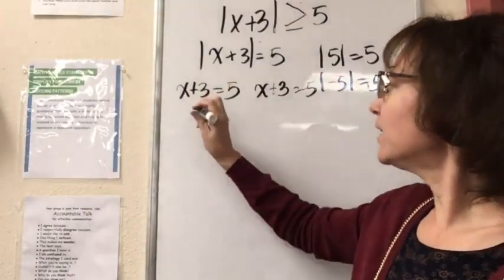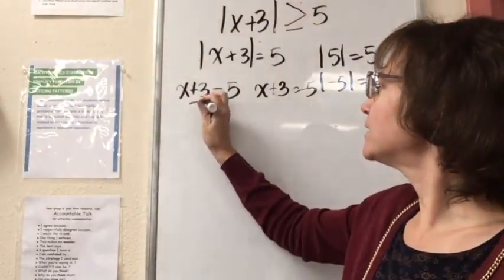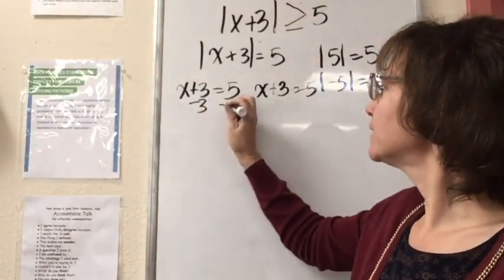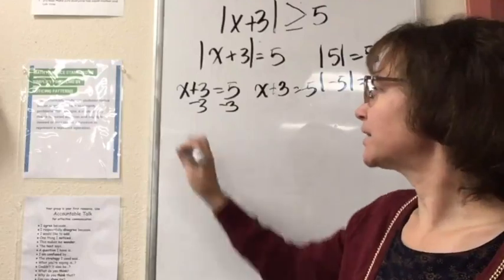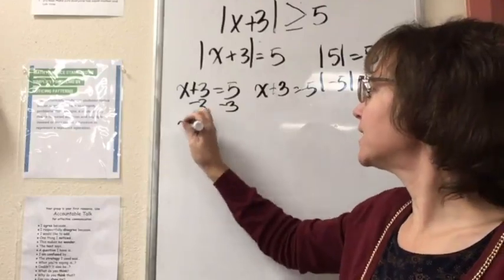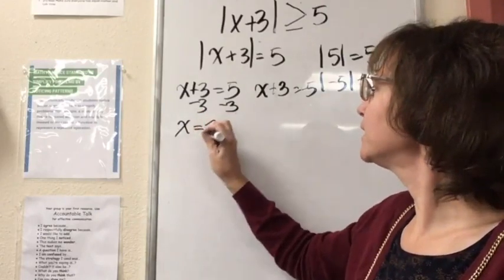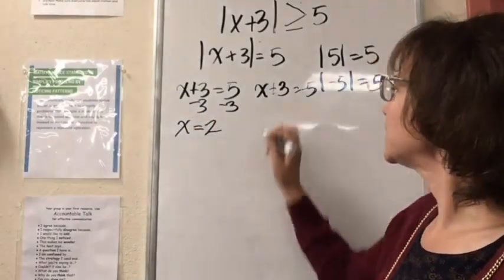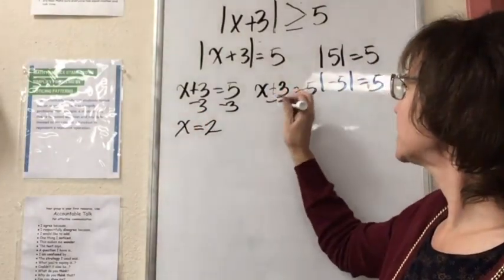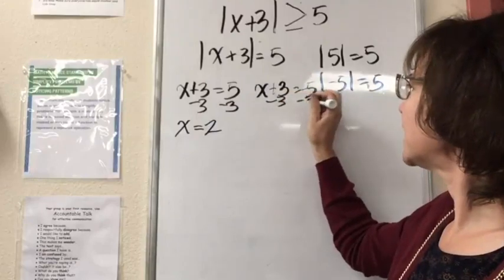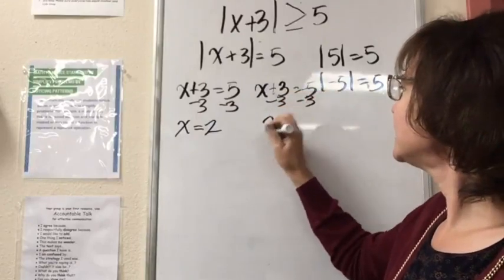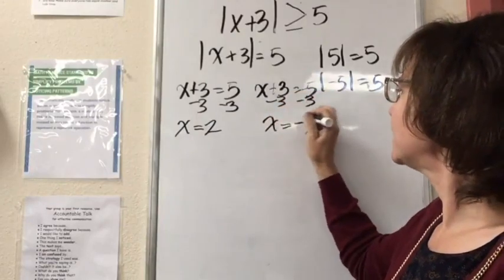So I can go ahead and solve for x. Subtract 3 from both sides — subtraction property of equality — x is equal to 2. Subtract 3 from both sides of the other equation, and x is equal to negative 8.